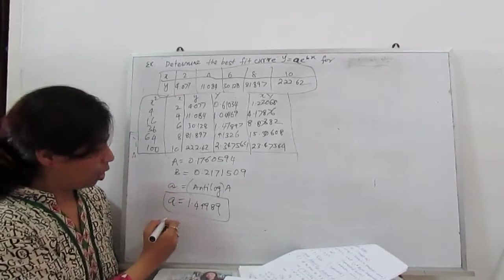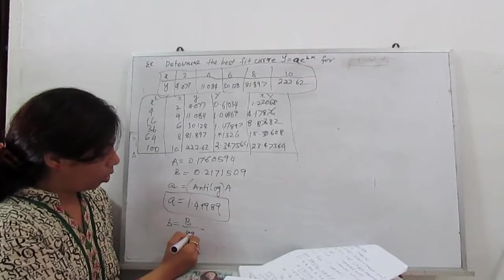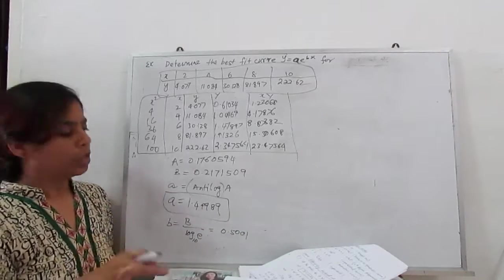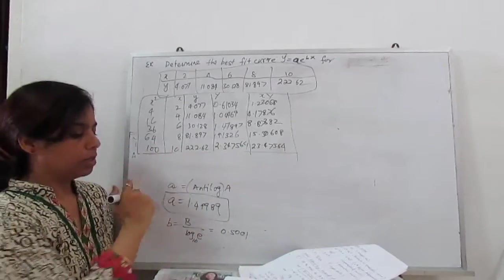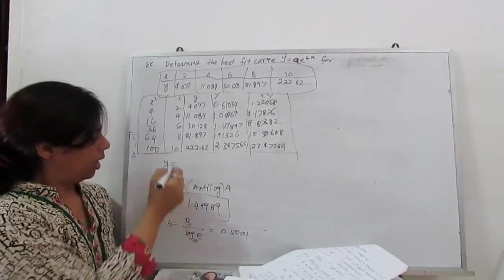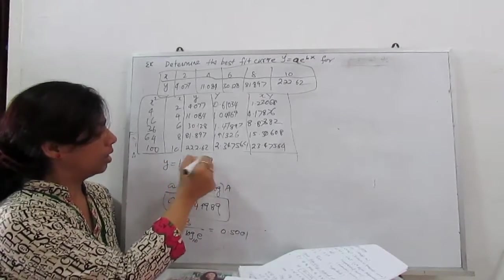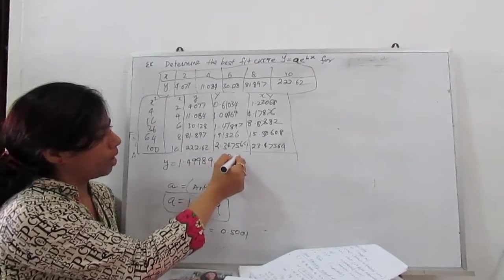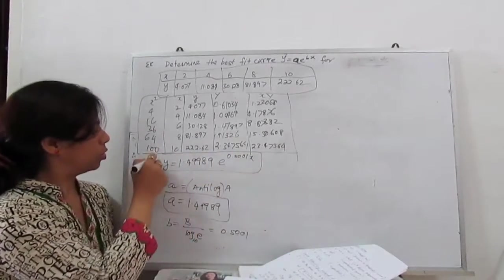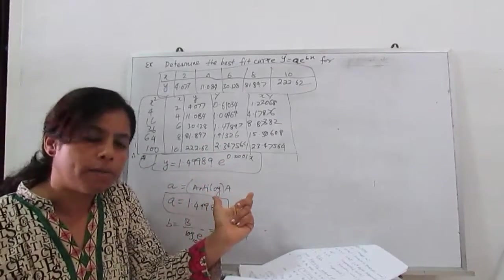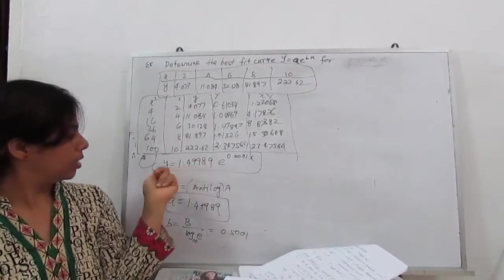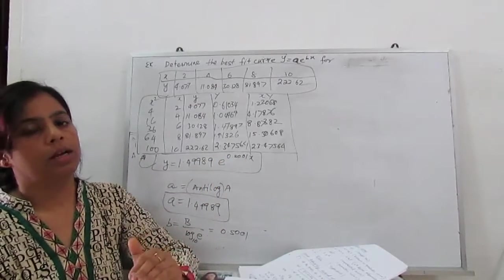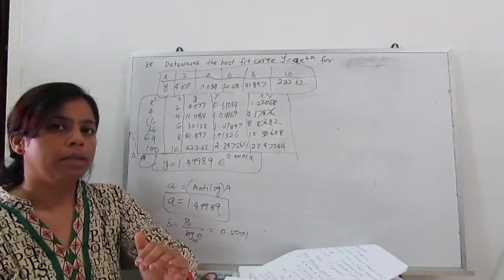Similarly b. What is small b? b is capital B divided by log of antilog base 10 e. So b is given by 0.5001. So next, our equation, best fit curve. y equals a, a is 1.49989 into e to the power bx. So b is 0.5001x.